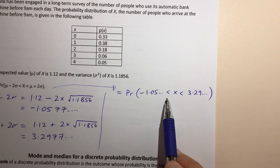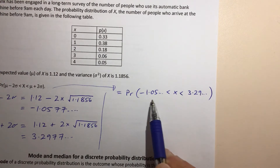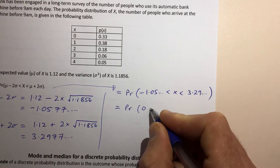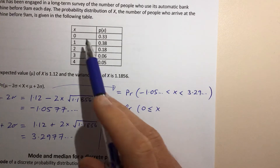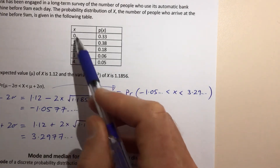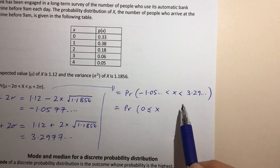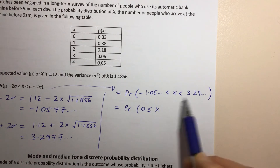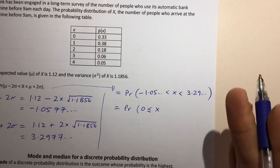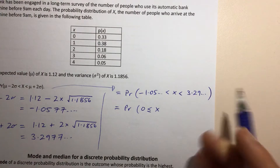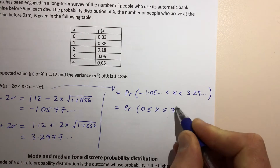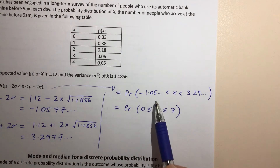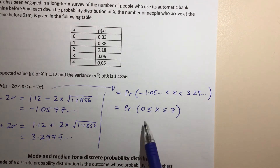Saying that X is greater than negative 1.05 is really just equivalent to saying X is greater than or equal to 0 — the smallest value it can be is 0. At the other end, saying X is less than 3.29 means X is going to be 3 or less, because 3.29 is our upper limit, covering 3 and everything below it. So we could say X is less than or equal to 3. Essentially, we're converting these continuous-style values back into the values our discrete variable can actually take.